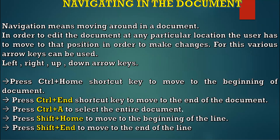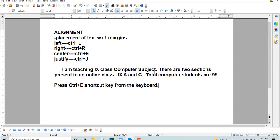The next concept is navigating in the document. Navigate means moving around the document. In a Writer document you can move around using the arrow keys. For example, I click here — the cursor is moving. I press the left arrow key, then the right arrow key — the cursor comes down. You can use all arrow keys: up, down, left, right.